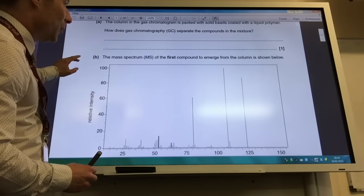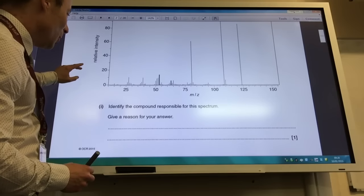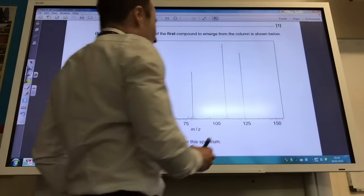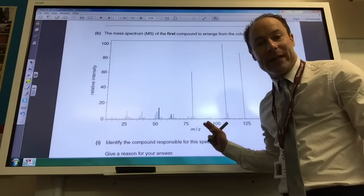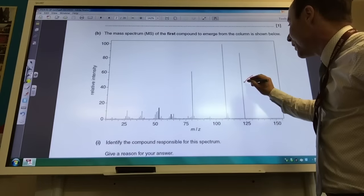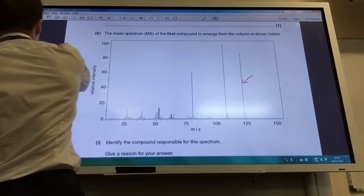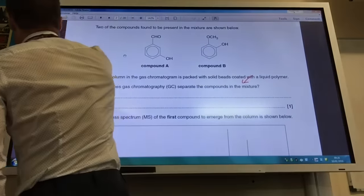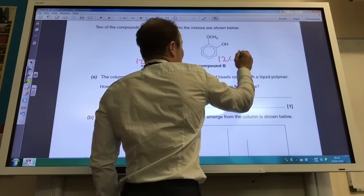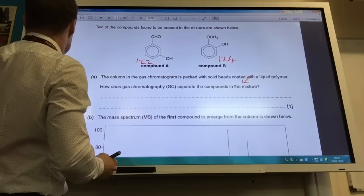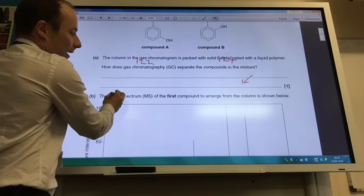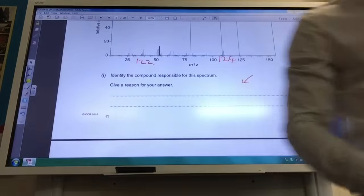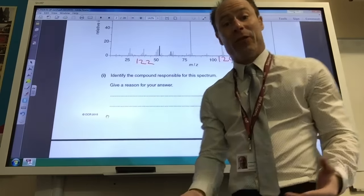The mass spectrum of the first compound to emerge from the column is shown below. Identify the compound responsible for this spectrum and give a reason. So hopefully you can see that we have our highest M over Z value at 124. If we add up the molar mass of compound A you find it to be 122. So this guy is 122 and this guy is 124. We worked out here that it was a peak at 124 and therefore it must be compound B, because the M over Z value for the molecular ion is 124 for compound B.